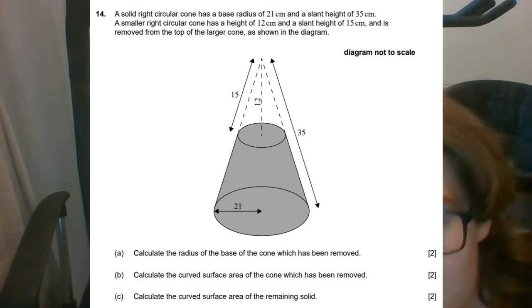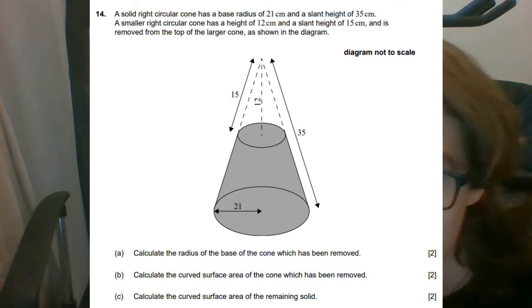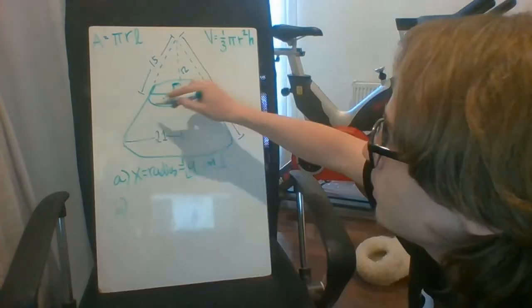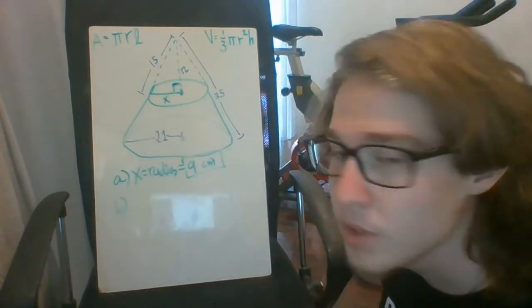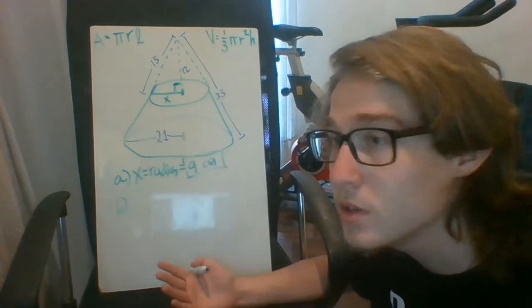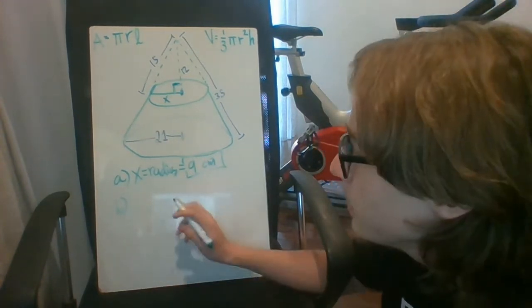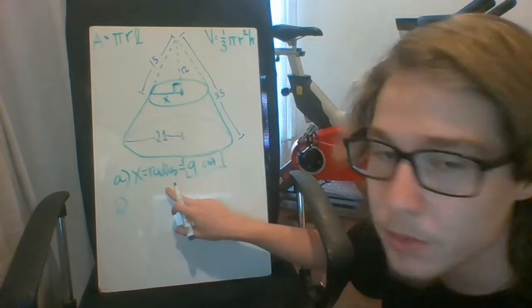Now for part B, it asks us to calculate the curved surface area of the cone which has been removed, so it's the one up here. Usually for part B, you're going to need something from part A, and for part C, something from part B as a general rule. And in this scenario, we needed the radius.